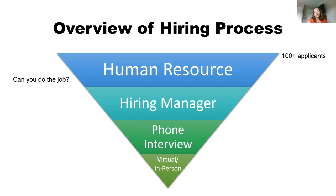Because HR professionals don't know the technical information inside and out, you have to make sure your resume can be assessed by a non-scientist and that it matches the job description. The HR professional narrows hundreds of applicants down to a much smaller number — typically around 30 — to send to the hiring manager. The hiring manager then vets those, and either the HR person or the hiring manager reaches out for a phone interview, sometimes multiple phone interviews, to narrow down the applicant pool further.